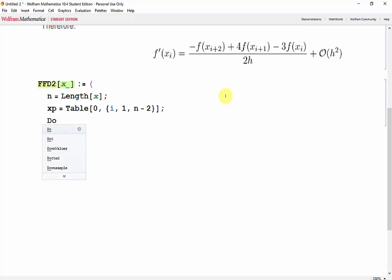Then we'll just use a do loop again to do our calculations, storing everything in xp. And we want the value of x. And now looking at the formula, minus f of x_{i+2} plus 4 f of x_{i+1}, minus 3 f of x_i, divided by 2 times the step size.